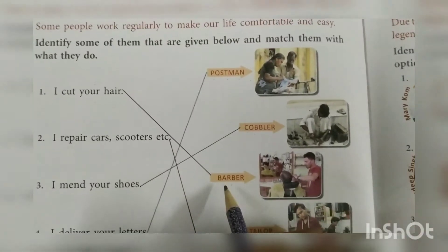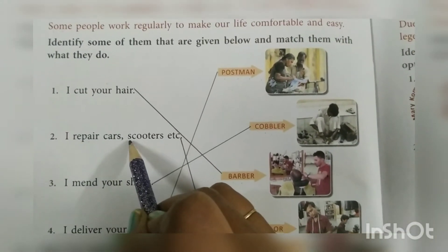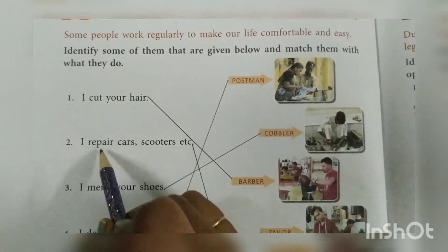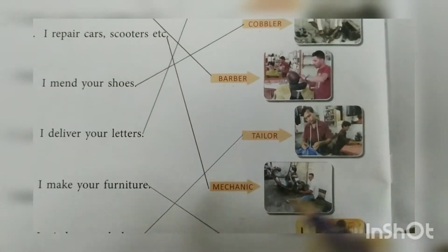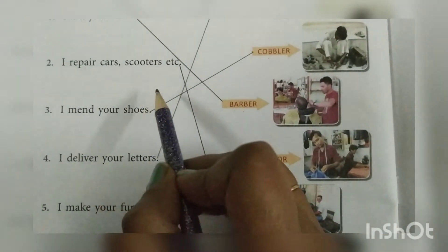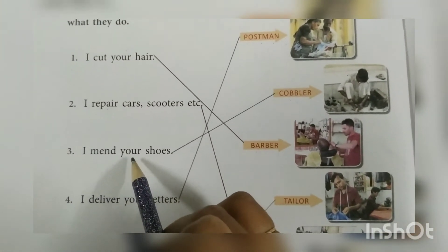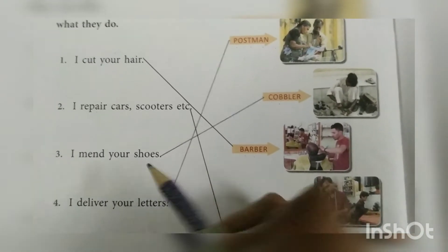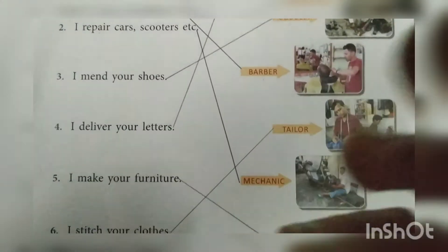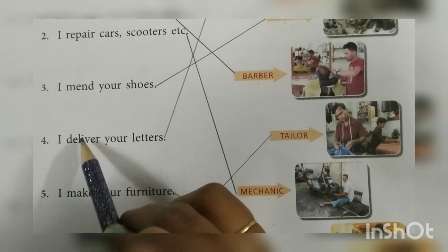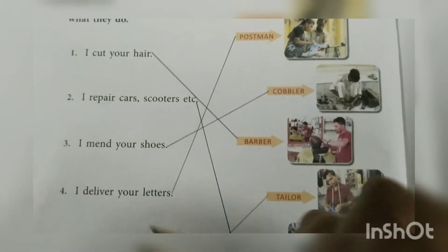Here match with picture and spelling. Next: I repair cars, scooters, etc. — I repair cars and scooters etc. Woh humare cars aur scooter repair karta hai. So here the picture is Mechanic, M-E-C-H-A-N-I-C. Match with them. Third: I mend your shoes — I mend your shoes. Match with Cobbler, C-O-B-B-L-E-R. Number four: I deliver your letters — I deliver your letters. To humare ghar pe letters kone deliver karta hai?